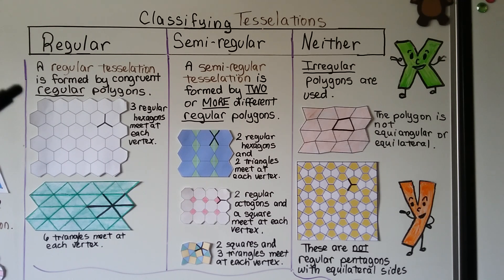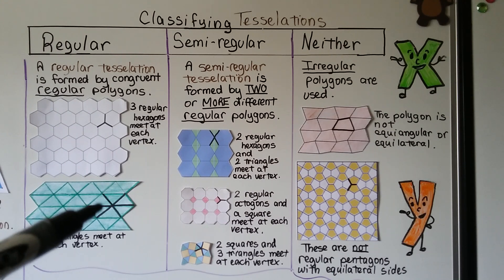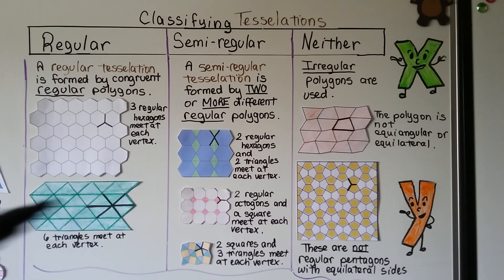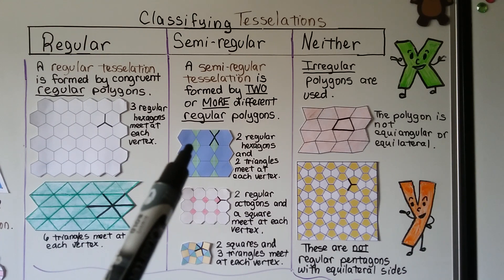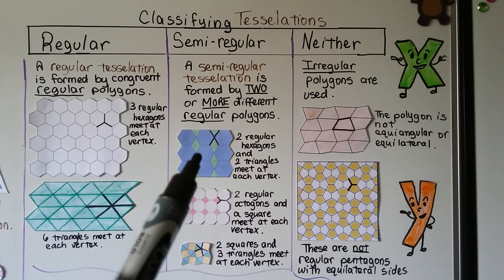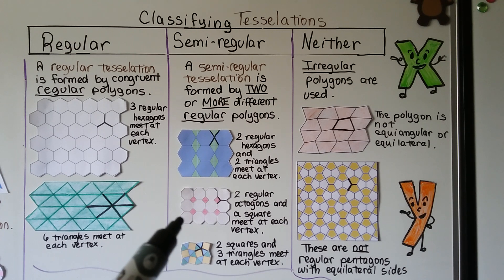A regular tessellation is formed by congruent regular polygons — for example, three regular hexagons meeting at each vertex, or six triangles meeting at each vertex. A semi-regular tessellation is formed by two or more different regular polygons: two regular hexagons and two triangles at each vertex, two regular octagons and a square at each vertex, or two squares and three triangles at each vertex.